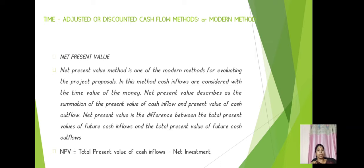Next, the time adjustment or discounted cash flow method, also called the modern method. Under that, we have net present value. Under net present value, we evaluate the project proposal. In this method, cash inflows are considered with the time value of money. Net present value describes the summation of the present value of cash inflows and the present value of cash outflows — it is the difference between the total present value of future cash inflows and the total present value of future cash outflows.